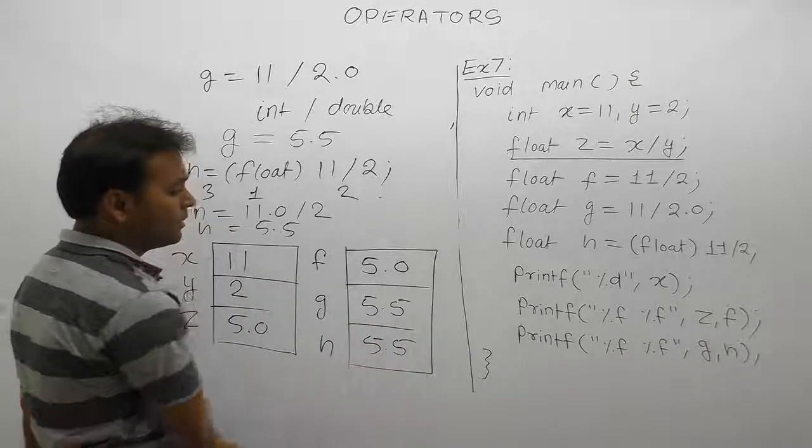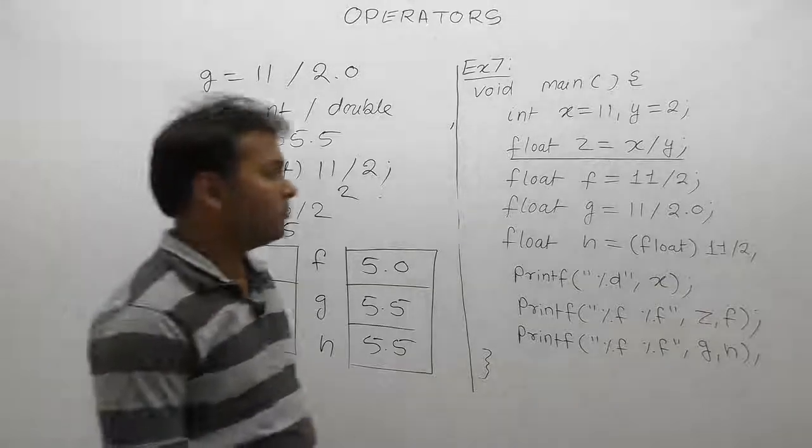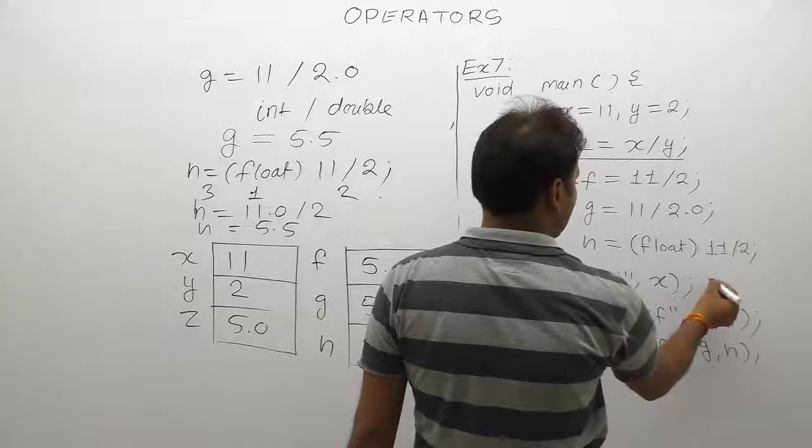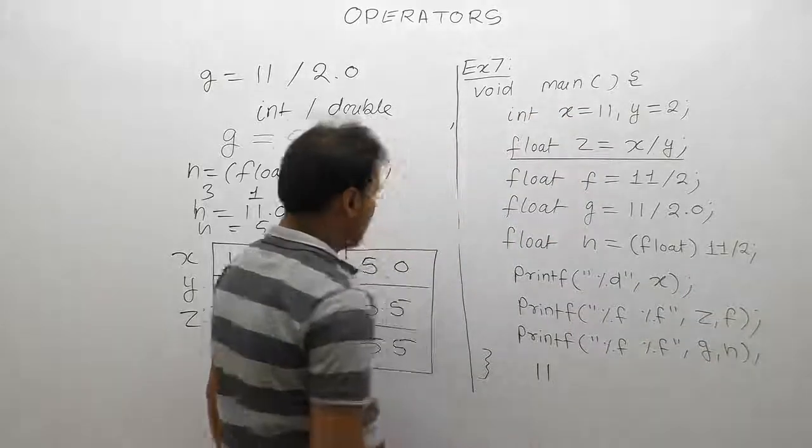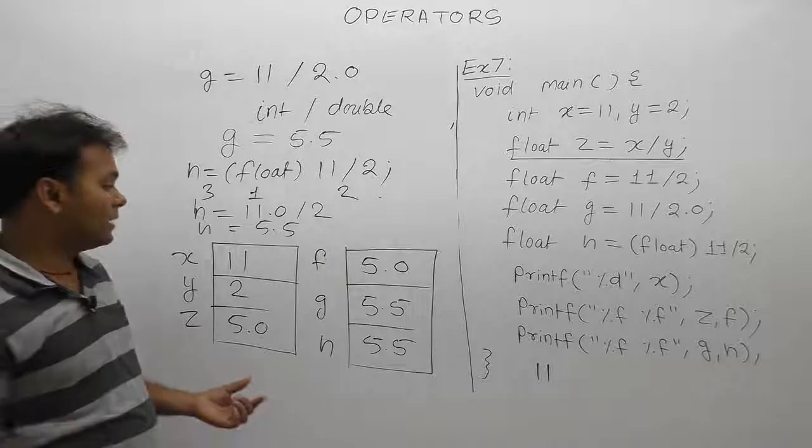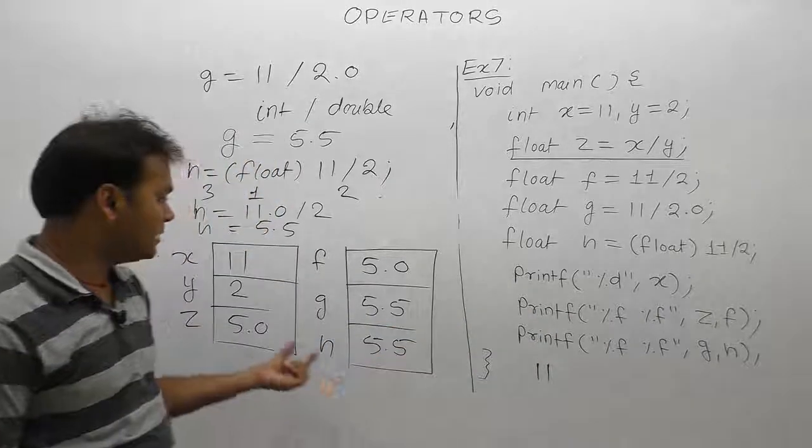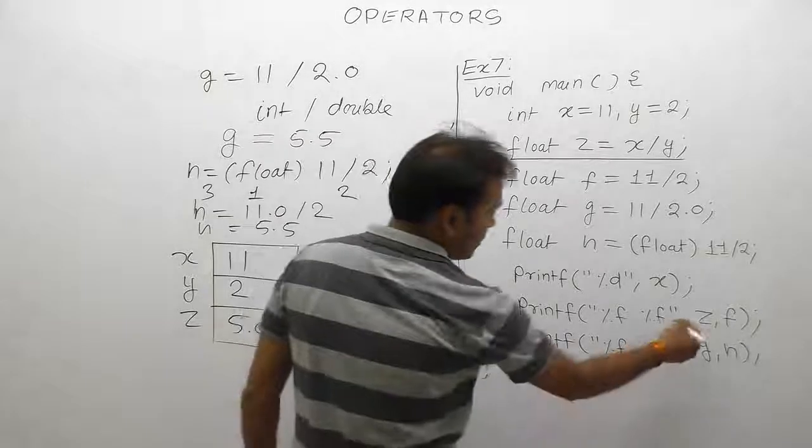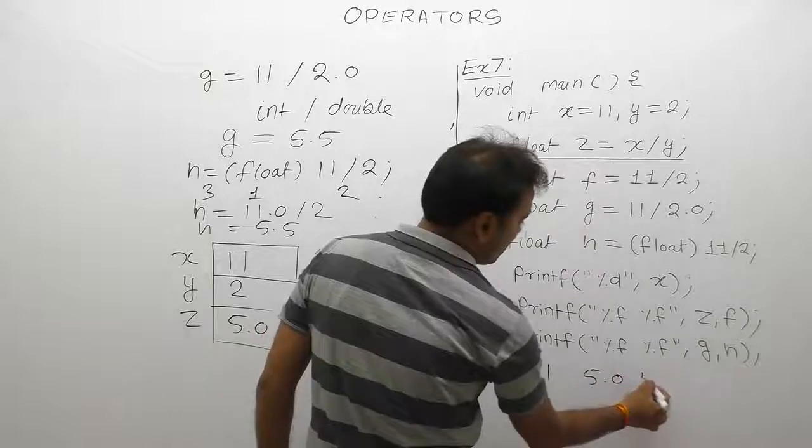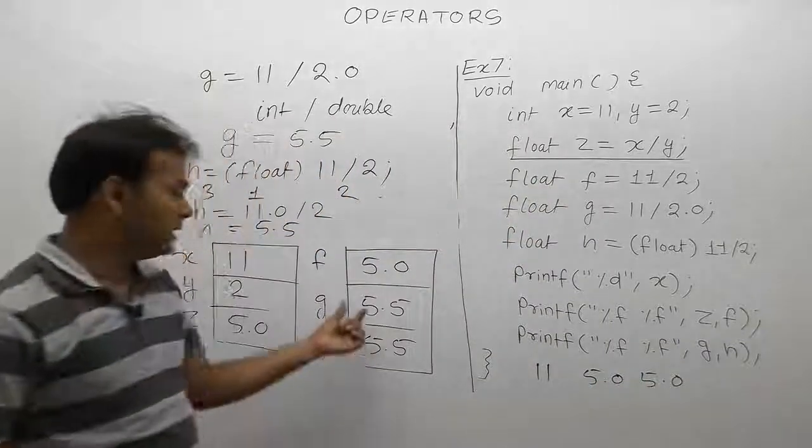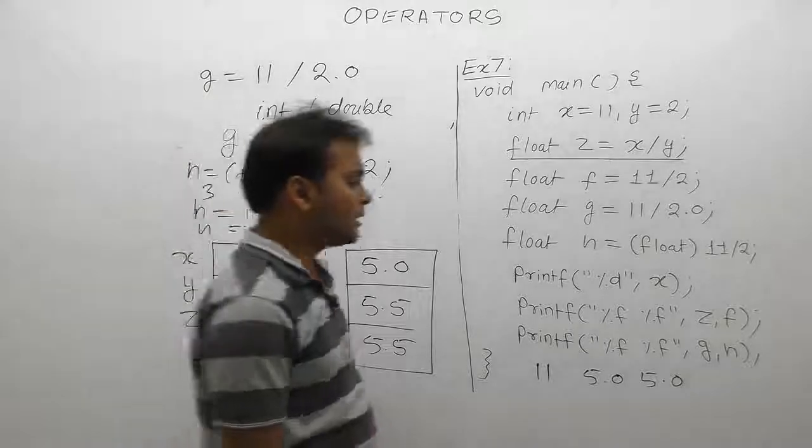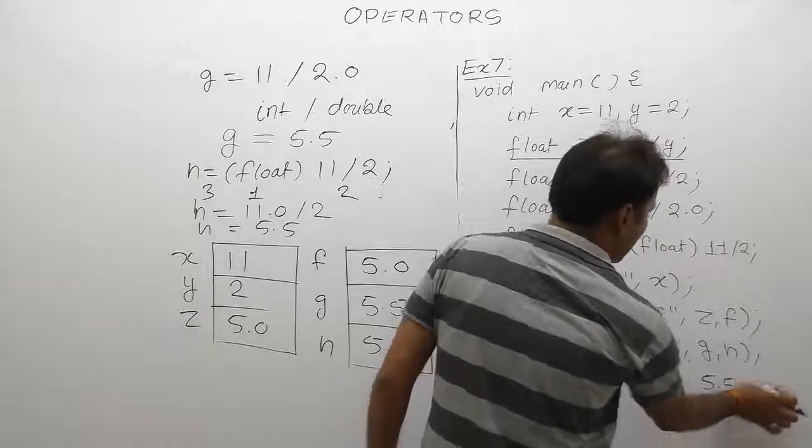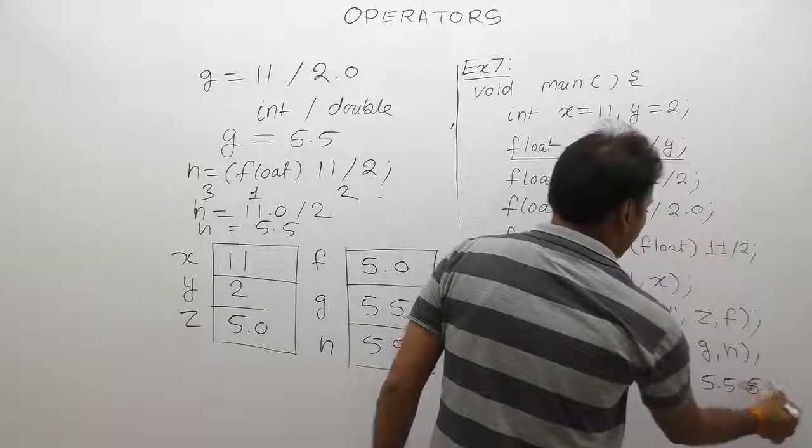Finally, the output: First, value of x is 11 from the first expression. Next, the value of z and f: z is 5.0, f is 5.0. Next, the value of g and h: g is 5.5 and h is 5.5. This is the result of the examples.